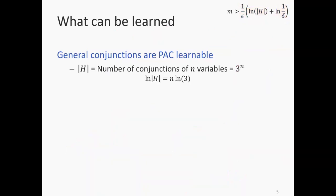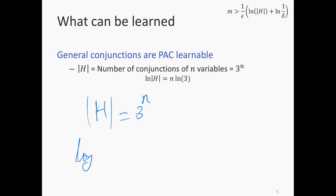So we have 3^n conjunctions — size of h is 3^n. The only thing that really matters is the log of that. Someone asked after class: I sometimes write log, sometimes ln, natural log. In everything except the discussion about entropy, I always assume natural log. So log of the size of h is basically n log 3, which is order of n.